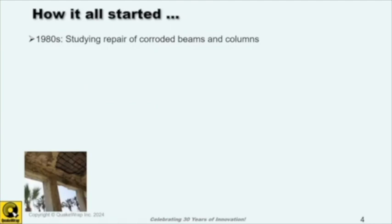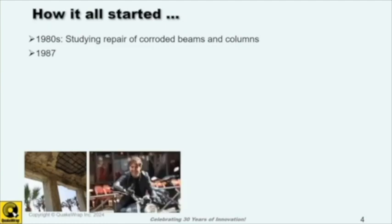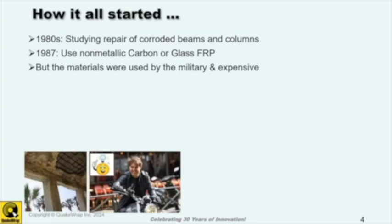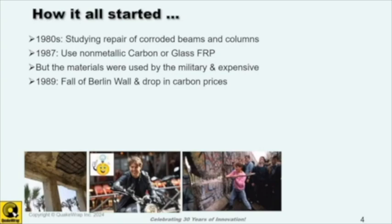This whole thing got started back in the early 80s at the beginning of my career when I came to Arizona. We were trying to come up with a way to repair corrosion-damaged beams and columns, primarily in bridges. It was about 1987 when we came up with the idea of using non-metallic materials like carbon or glass to strengthen these structures. The problem was that at the time these materials were primarily being used by the Air Force and military — really beyond what the construction industry could afford. Luckily, about the same time, with the end of the Cold War and collapse of the Berlin Wall, the military's interest in carbon materials dropped, and so did their prices, making them reasonable for construction.